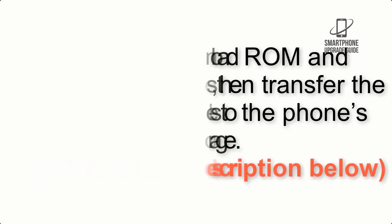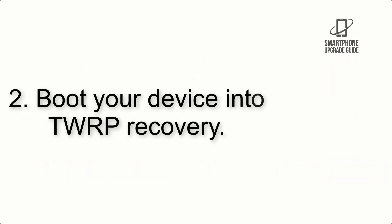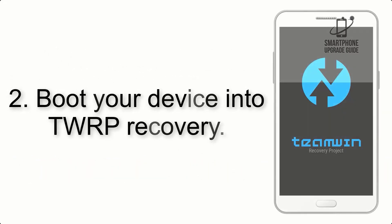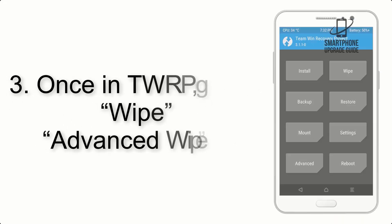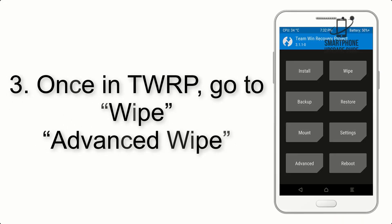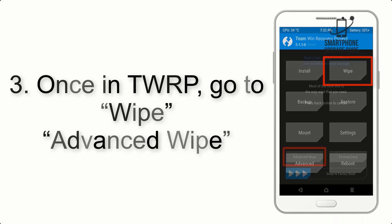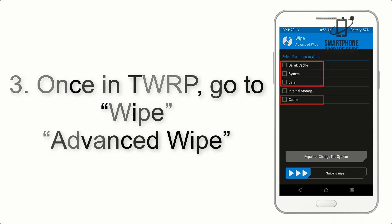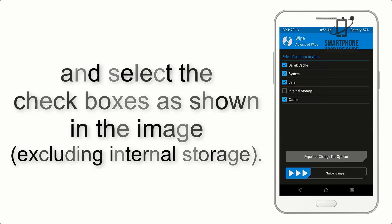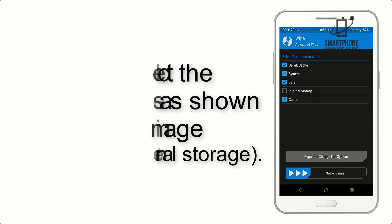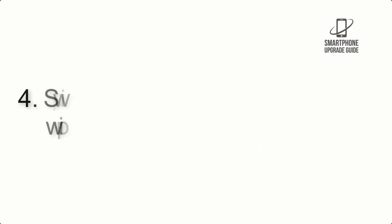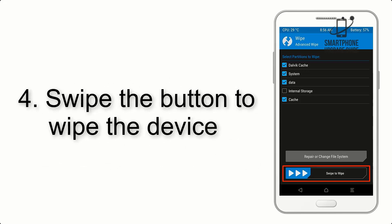Step 2: Boot your device into TWRP recovery. Once in TWRP, click on Wipe, then Advanced Wipe, and select the checkboxes as shown in the image, excluding internal storage.